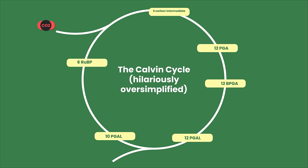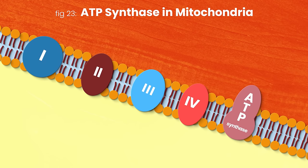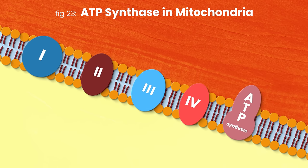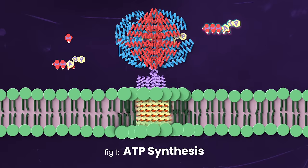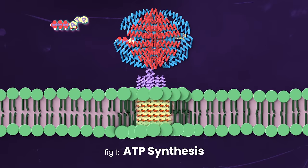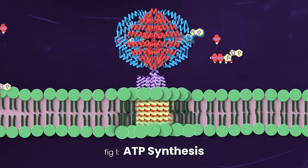In plant cell chloroplasts, the ATP here will be used to convert carbon dioxide into glucose, thereby storing the energy plants captured from sunlight. In your mitochondria — and in plant mitochondria too — ATP synthase makes ATP using the energy from those very same sugars. Regardless, this happens because it's ATP synthase's job to, you guessed it, synthesize ATP.